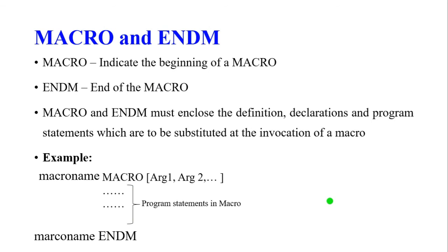These are the assembler directives used when writing 8086 microprocessor programs. Importantly, assembler directives do not generate any machine code. Thank you.